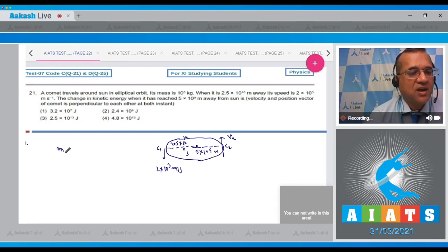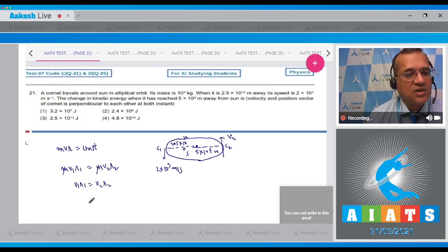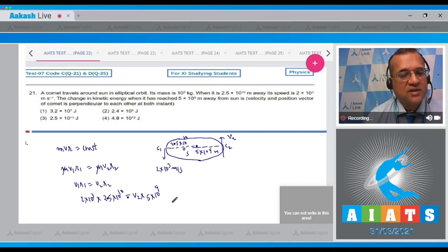So we take that mvr is constant. Therefore, m cancels out, m v1 r1 is equal to m v2 r2. So m cancels out. So v1 r1 is equal to v2 r2. So 2 into 10 to the power of 3 and the distance is 2.5 times 10 to the power of 10 is equal to v2 and r2 to find out and that is 5 into 10 to the power of 9. So we will find from here v2 equal to 10 to the power of 4 meters per second.